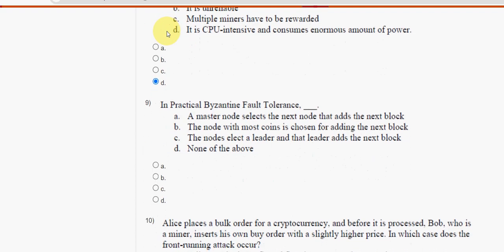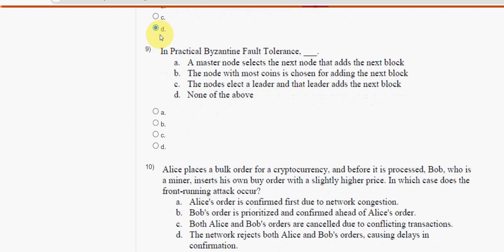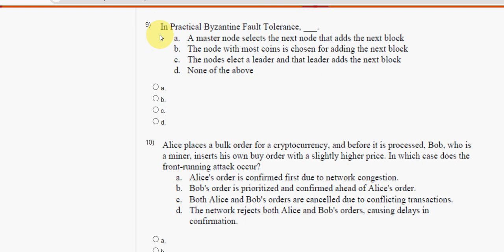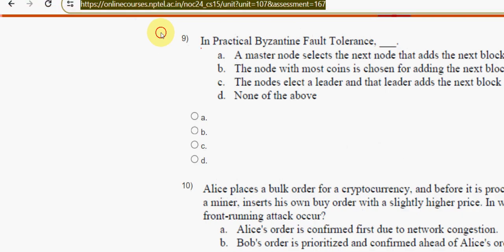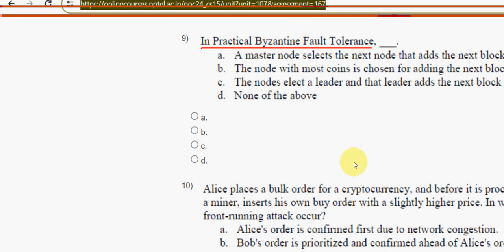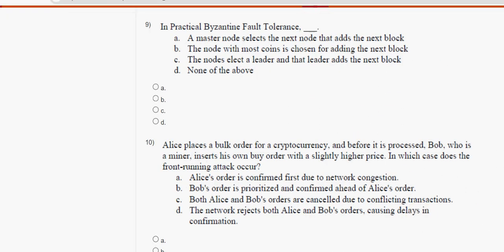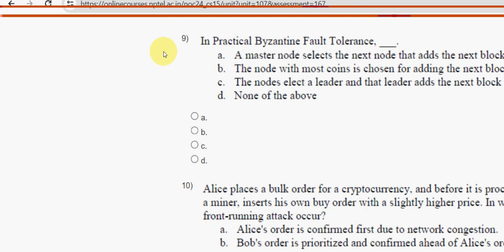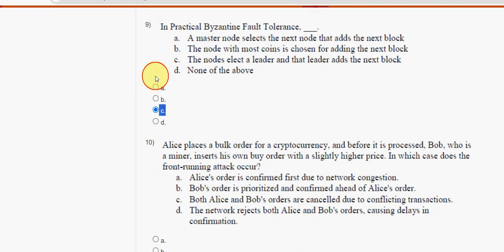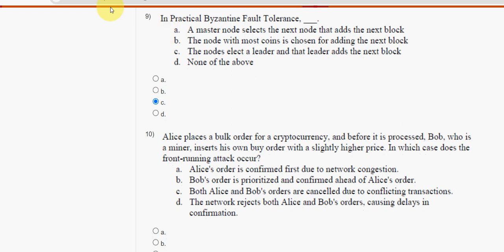Ninth question: in Practical Byzantine Fault Tolerance, what will happen? The answer is option C — the nodes elect a leader and that leader adds the next block. Mark option C, and moving on to the final question of the assignment.